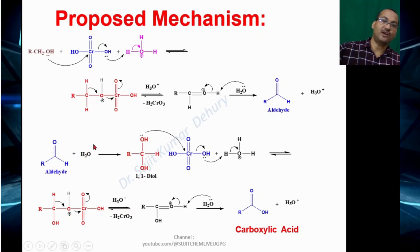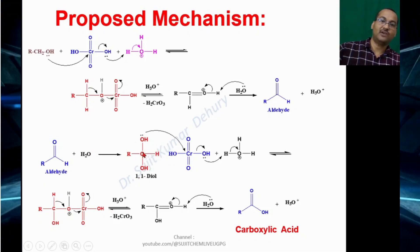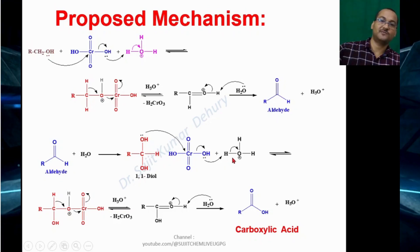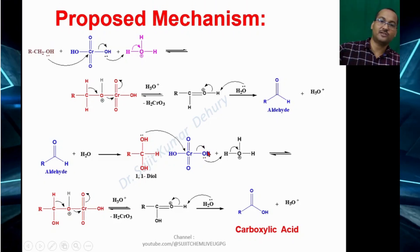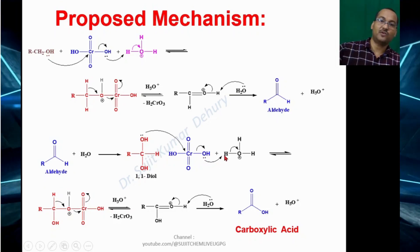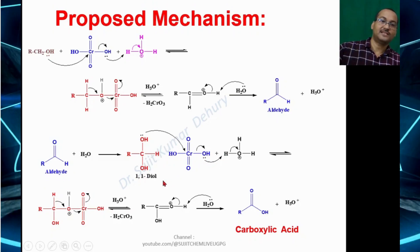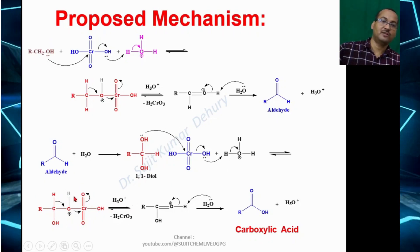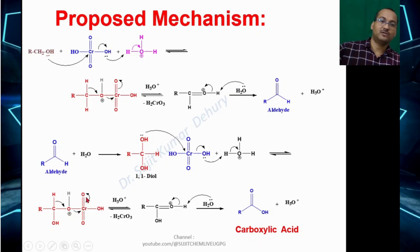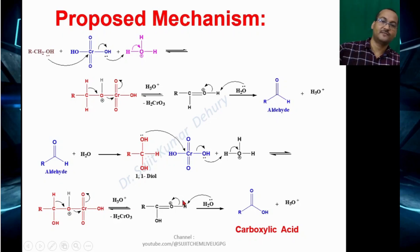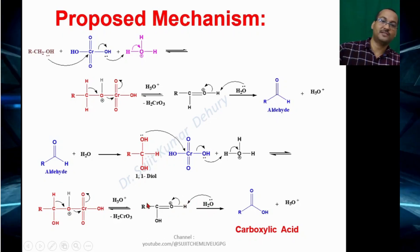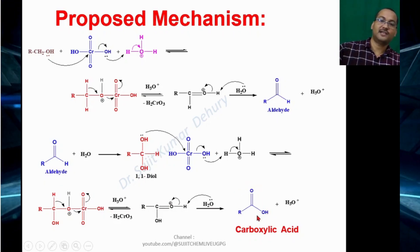Aldehyde reacts with water to give a 1,1-diol. This 1,1-diol reacts again with H2CrO4 in the presence of H+: the OH lone pair acts as nucleophile attacking chromium, the Cr–OH bond breaks on oxygen, and the oxygen lone pair attacks H+. The resulting compound undergoes simultaneous bond making and breaking to give a protonated acid. Water then removes the proton to give carboxylic acid.